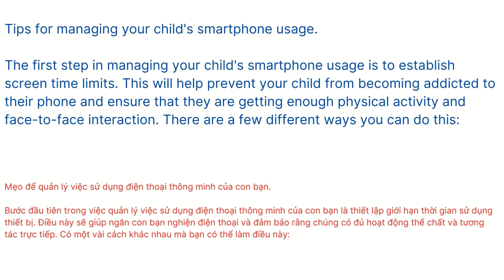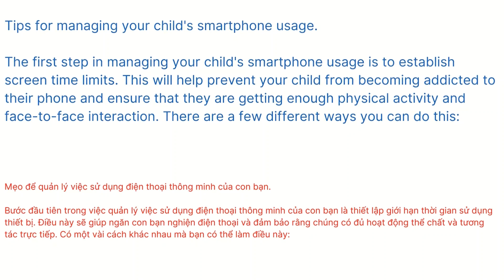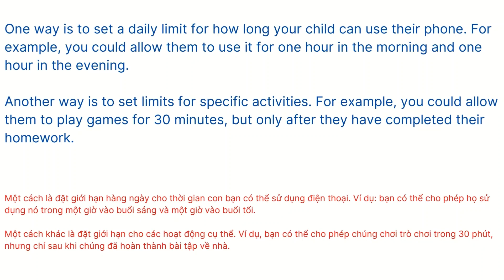The first step in managing your child's smartphone usage is to establish screen time limits. This will help prevent your child from becoming addicted to their phone and ensure that they are getting enough physical activity and face-to-face interaction. One way is to set a daily limit — for example, allowing them to use it for one hour in the morning and one hour in the evening. Another way is to set limits for specific activities, such as allowing them to play games for 30 minutes but only after they have completed their homework.